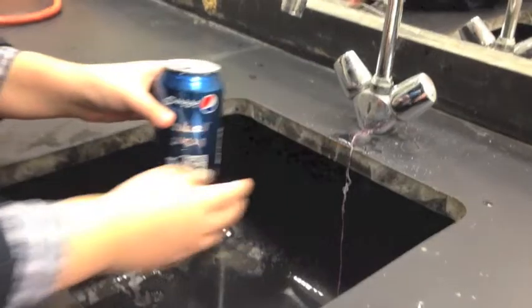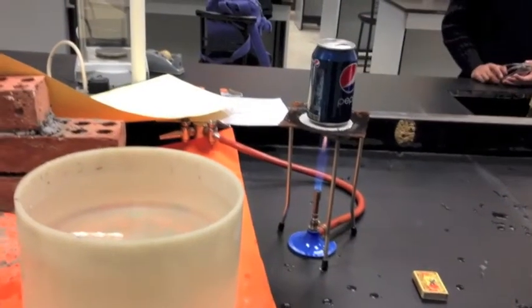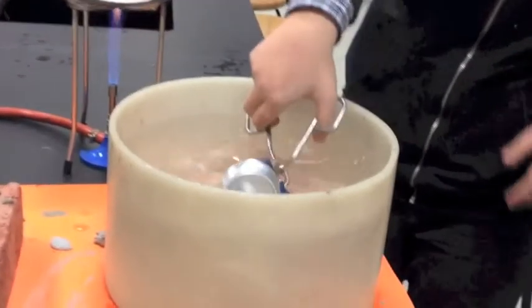We place a small amount of water in the can. We place the can over the Bunsen burner so that it becomes hot. When the water begins to evaporate and steam rises from the can, you flip it over into a cold bowl of water.